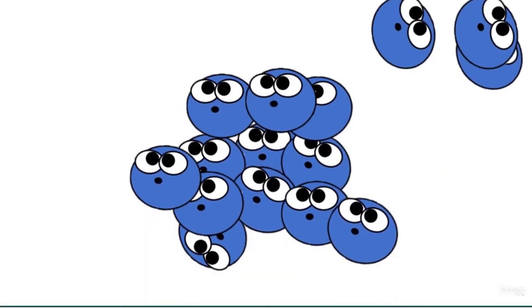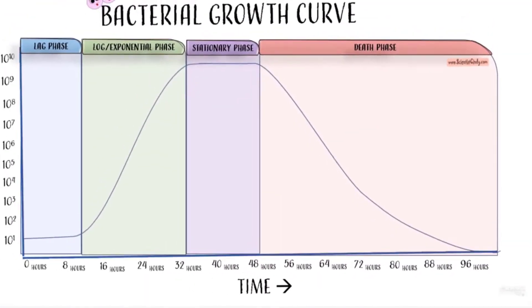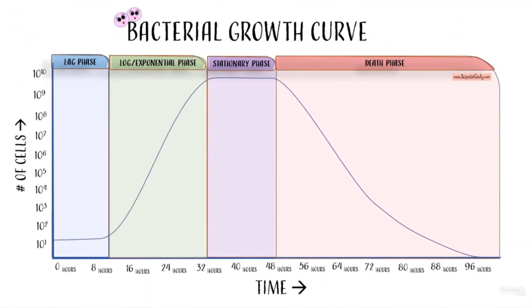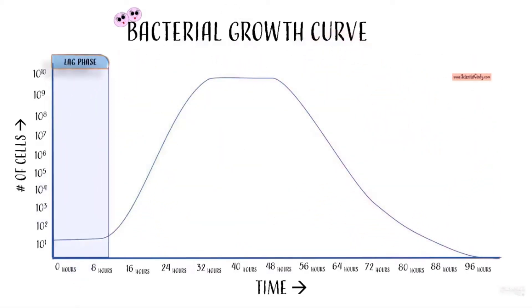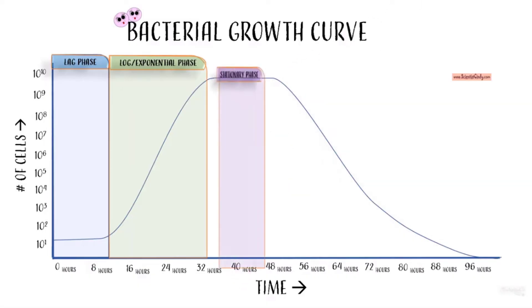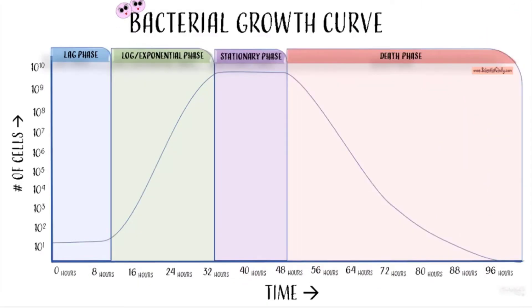All bacteria growth curves grown in cell culture in the laboratory exhibit the same four following phases: the lag phase, the log phase or exponential phase, the stationary phase, and the death phase.